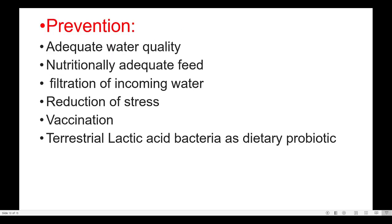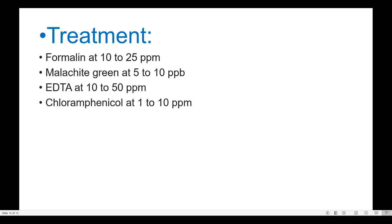Prevention: adequate water quality, nutritionally adequate feed, filtration of incoming water, reduction of stress, vaccination, and terrestrial lactic acid bacteria as dietary probiotic. Treatment: formalin at 10–25 ppm, malachite green at 5–10 ppb, EDTA (ethylene diamine tetraacetic acid) at 10–50 ppm, and chloramphenicol at 1–10 ppm.